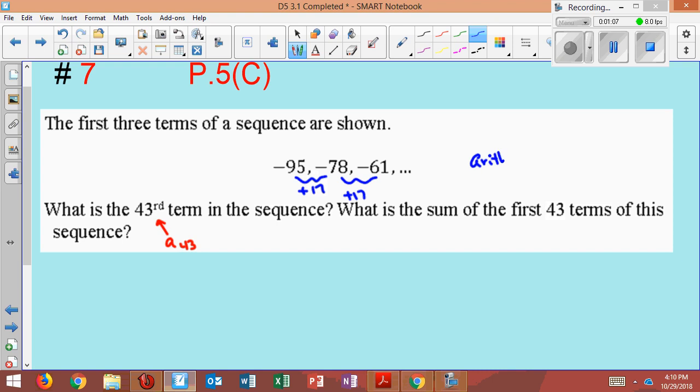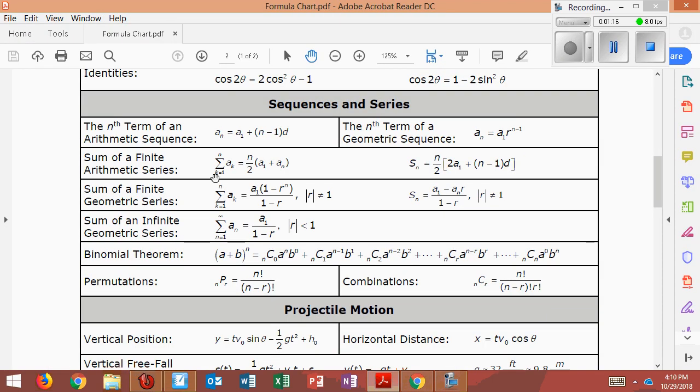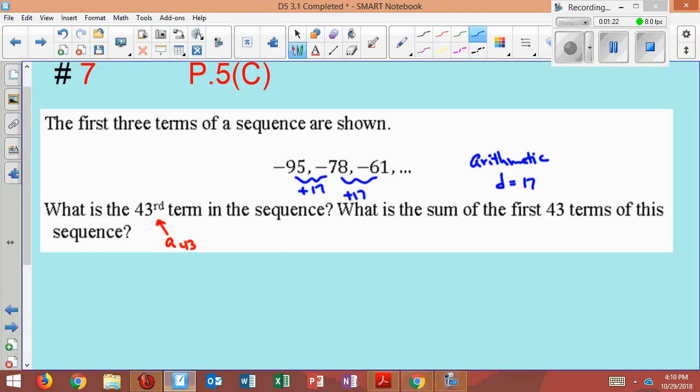And not only is it arithmetic, our difference we just determined is 17. So if I want to find the 43rd term, the formula says here I would use this form, the nth term. So I'll copy that down.